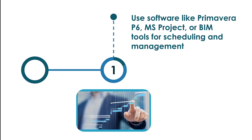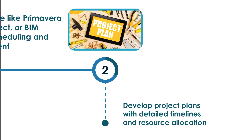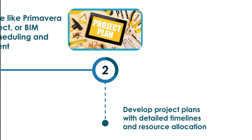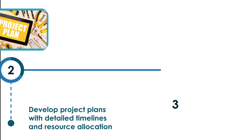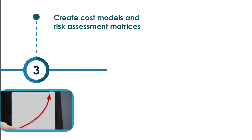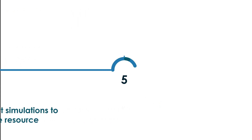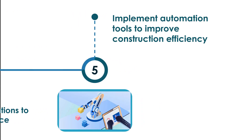For prototype development, use software like Primavera P6, MS Project, or BIM tools for scheduling and management. Develop project plans with detailed timelines and resource allocation, create cost models and risk assessment matrices, conduct simulations to optimize resource usage, and implement automation tools to improve construction efficiency.